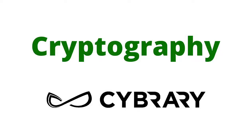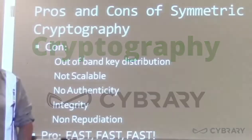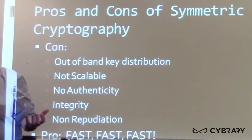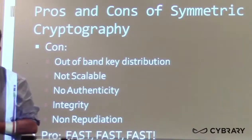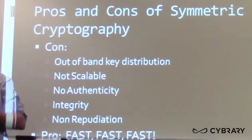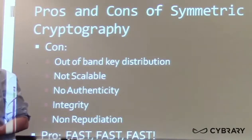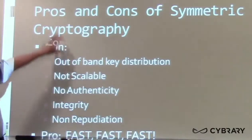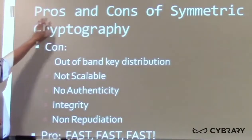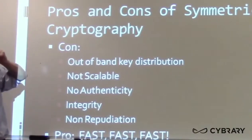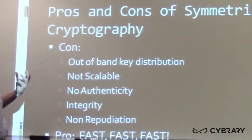We've really wrapped up symmetric cryptography. We've talked about the basics — the idea of the same key to encrypt that's used to decrypt. We've looked at both block and stream ciphers. We talked about how blocks were more secure but they were slow, and stream ciphers were faster but less secure. Ultimately, we've got to look at the pros and cons of why we would use symmetric cryptography and why we might not.